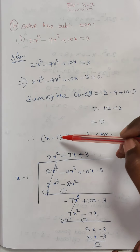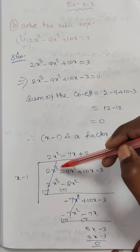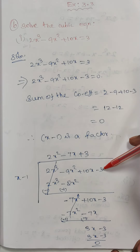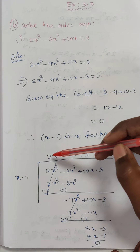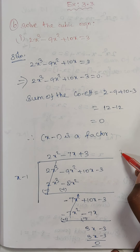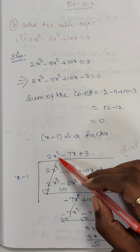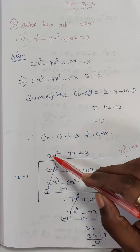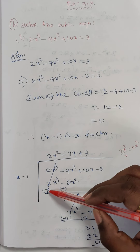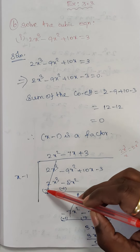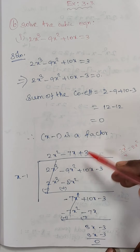Now I am going to divide the given equation 2x³ minus 9x² plus 10x minus 3 by the factor x minus 1. 2x³ divided by x equals 2x². Then 2x² times x gives 2x³, and 2x² times minus 1 gives minus 2x². Changing signs: minus 9x² plus 2x² equals minus 7x².